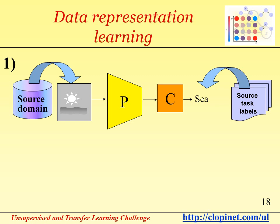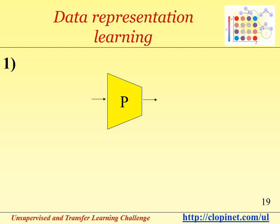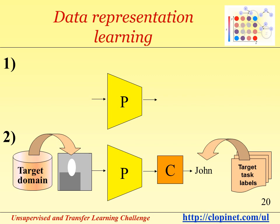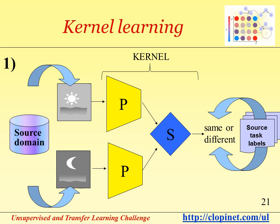On this slide, we illustrate schematically the method of data representation learning. First, you use a combination of preprocessor and classifier trained with source domain data. Then you extract the preprocessor and plug it into another system that will be trained on target domain data. An alternative method is to use kernel learning. A kernel is a learning machine composed of three elements: two identical replicas of a preprocessor and a comparator S that compares the outputs of the preprocessors and outputs whether or not the inputs are identical or different.